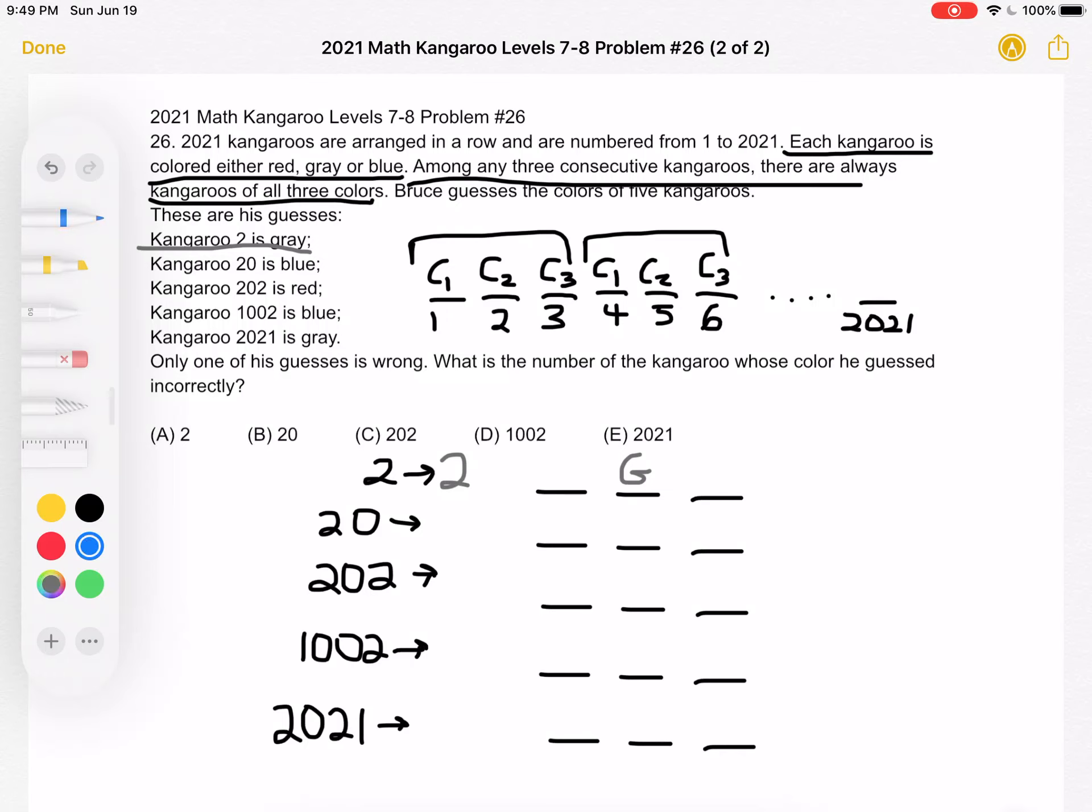So basically that tells us that color 2 is gray. His second guess is that kangaroo 20 is blue. 20 divided by 3, we get a remainder of 2 as well. That tells us color 2 is blue. So these statements we can already see cannot both be true, but we're not sure yet which one is the incorrect guess.